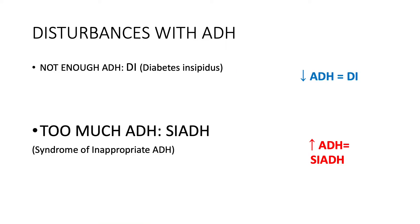Now we can jump into disturbances with ADH. Lots of ADH means lots of water in the body; little ADH means little water in the body. DI, or diabetes insipidus, is the label for not having enough ADH. SIADH, or syndrome of inappropriate ADH, relates to having too much ADH. DI only has two letters and SIADH has five letters — the one with lots of letters relates to lots of ADH, and DI with fewer letters relates to less ADH.